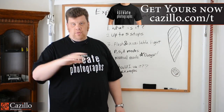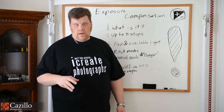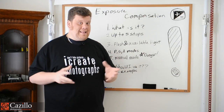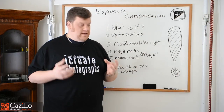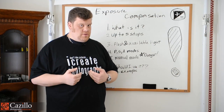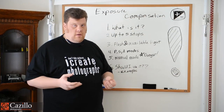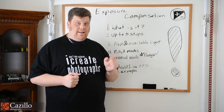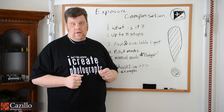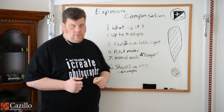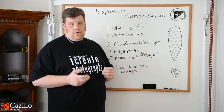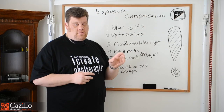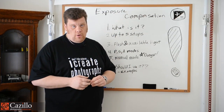It's a blanket exposure compensation — it's going to adjust up to five stops depending upon which way you go. One thing you need to be conscious of when using exposure compensation is that it affects both your flash and available light. I actually did not know that it affected both — I thought it was just the available light. So be careful: if you're shooting with a flash, you'll need to dial the exposure compensation separately on the flash if you only want to affect the flash. If you only want to affect the ambient, you're going to have to shoot in manual mode exclusively.